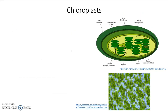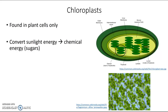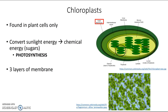What about chloroplasts? Chloroplasts are found in plant cells only — you will not find these in animal cells. Their job is to convert sunlight energy into chemical energy, generally in the form of sugars, a process you've heard of before: photosynthesis. In terms of their structure, chloroplasts have three layers of membrane: an outer membrane, an inner membrane inside of that, and then even further inside there are little green structures that also have another membrane around them. We'll get to those structures by name in chapter seven.